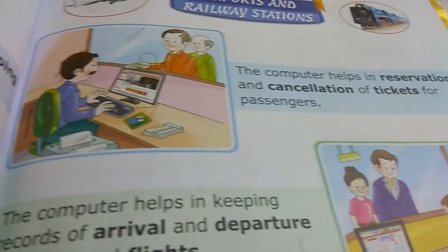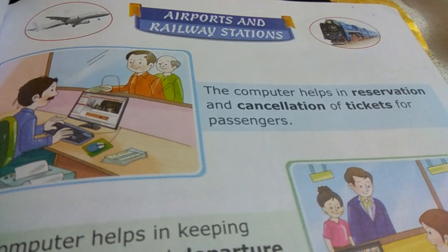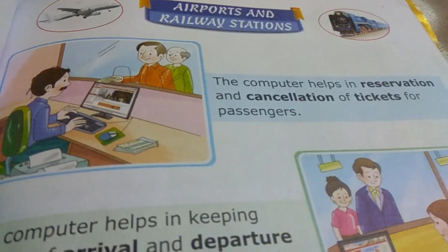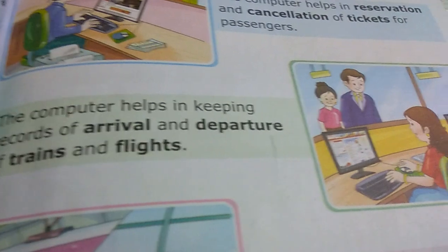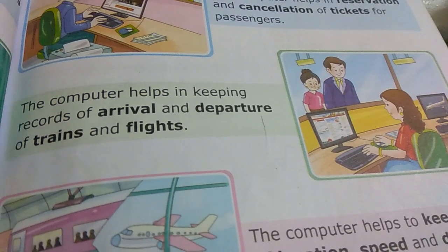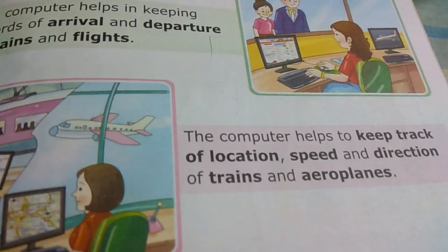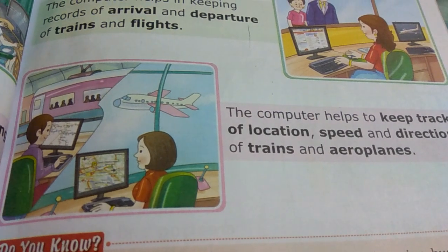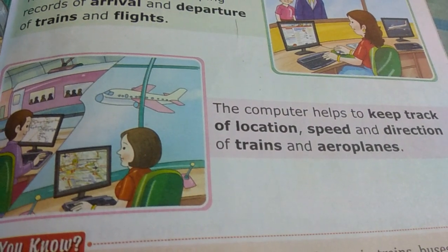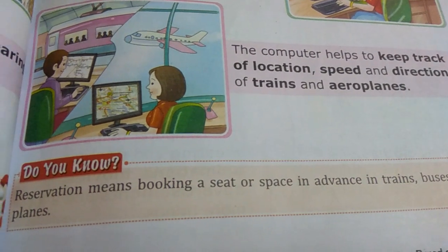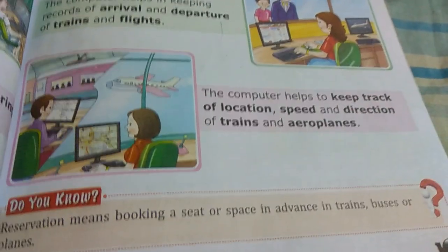Computers are also used in airports and railway stations. Computers help in reservation and cancellation of tickets for passengers. With the help of computers, we can make reservations and cancellations, and check records of when trains or flights will arrive and depart. Computers help to keep track of the location, speed and direction of trains and aeroplanes. Reservations means booking of seats or space in advance in trains, buses and planes.